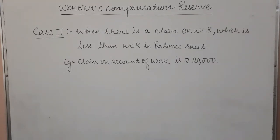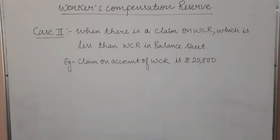Moving on to the second condition: when there is a claim on WCR which is less than WCR in the balance sheet. This means the claim against workers' compensation reserve is less than the reserve amount. For example, the claim on account of WCR is Rs. 20,000. The WCR balance is Rs. 60,000 — think of it like a piggy bank. Since the claim of Rs. 20,000 is less than Rs. 60,000, you can pay it easily.